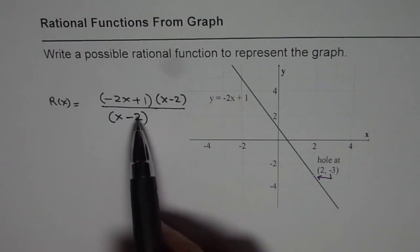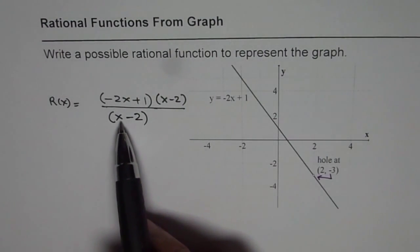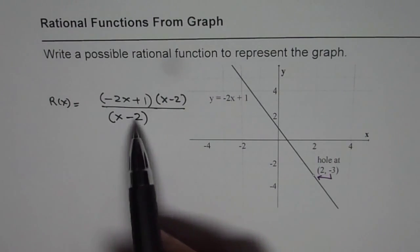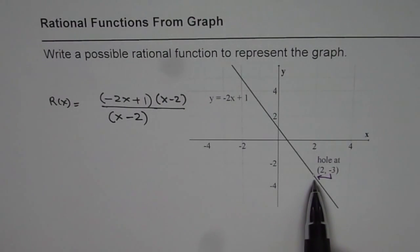Since there is a common factor, both are 0 at x equals to 2, they cancel out, leaving a hole at that point. So that is how we can understand how to write a rational function from the given graph.